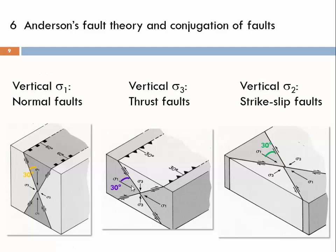The three main cases — normal faults, thrust faults, and strike-slip faults — each have either a vertical sigma 1, sigma 3, or sigma 2, with theta angles of 30 degrees between sigma 1 and either of the two conjugated faults. There is also a systematic angular relationship of 60 degrees between sigma 3 and these faults. Sigma 2 is always placed along the intersection line of the conjugated faults and is the only stress vector that lies on both faults.